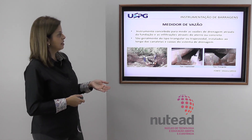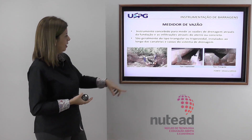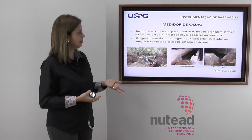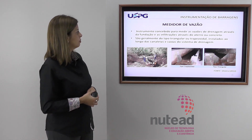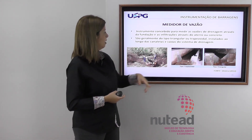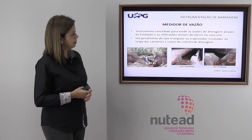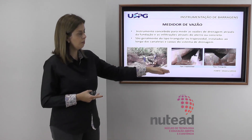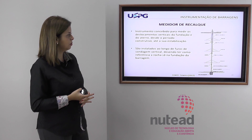O medidor de vazão é um instrumento concebido para medir as vazões de drenagem através da fundação e as infiltrações através do aterro ou do concreto. São instalados no pé das barragens, nas galerias de drenagem, ou em locais onde se queira conhecer essa vazão. São geralmente do tipo triangular ou trapezoidal, instalados ao longo das canaletas do sistema de drenagem. Como têm seção conhecida, mede-se o nível e consegue-se conhecer a vazão que está passando pelo instrumento.